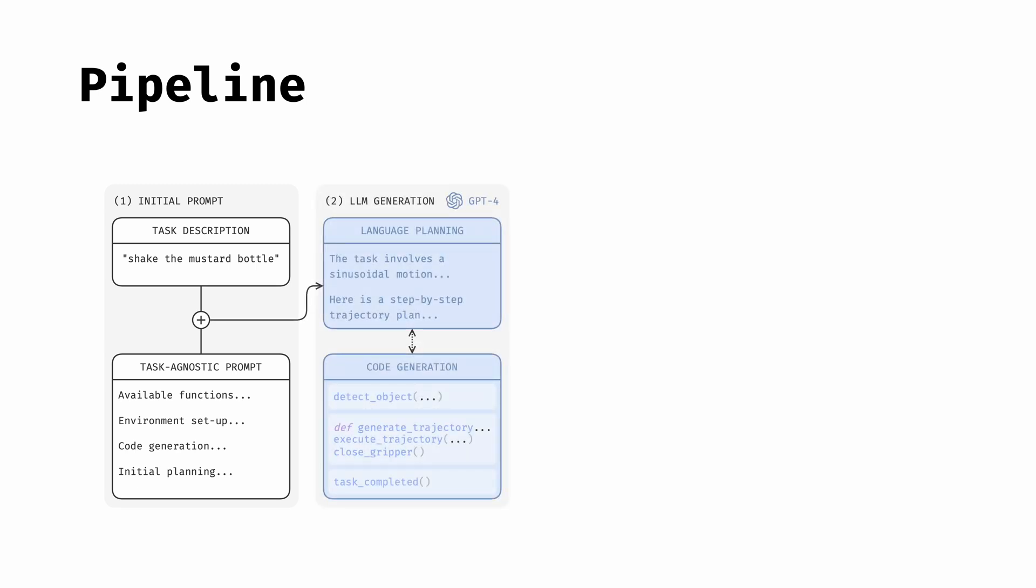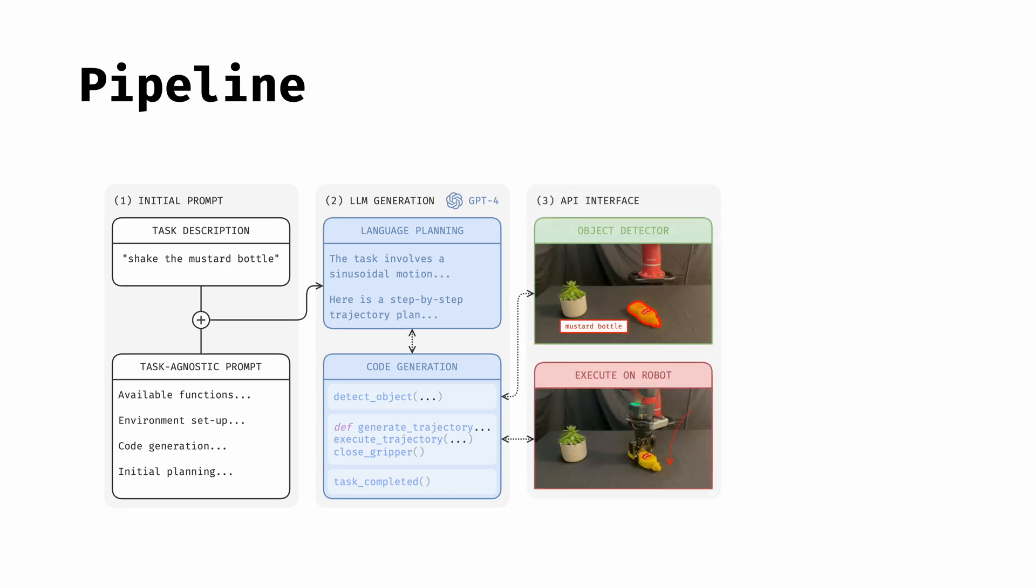The LLM then generates a high-level natural language step-by-step plan, as well as Python code associated with each step, which can be run by a standard Python interpreter. The generated code is used to interface with a pre-trained object detection model, and obtain automatically calculated 3D bounding boxes of the queried object from the segmentation maps using camera calibration.